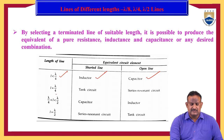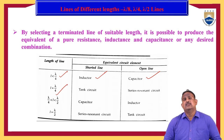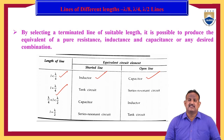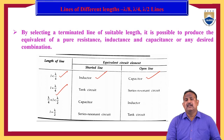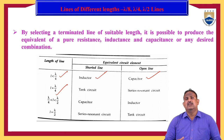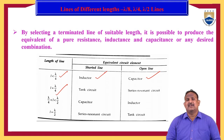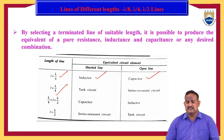If the length of the transmission line is lambda by 4 and we short circuit it, the circuit acts as a tank circuit. If we open circuit it, the transmission line acts as a series resonant circuit. If the length of the transmission line is between lambda by 4 to lambda by 2 and we short circuit it, the transmission line acts as a capacitor; if we open circuit it, the transmission line acts as an inductor.